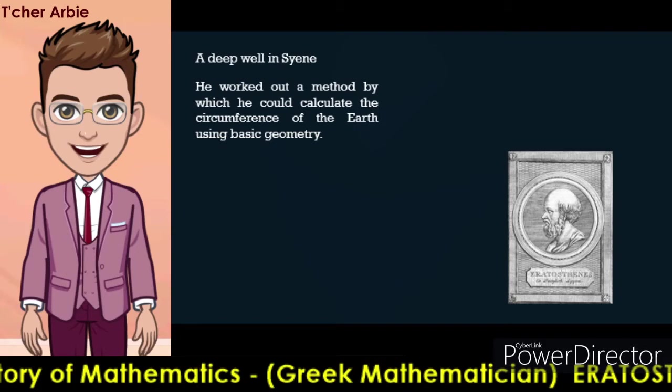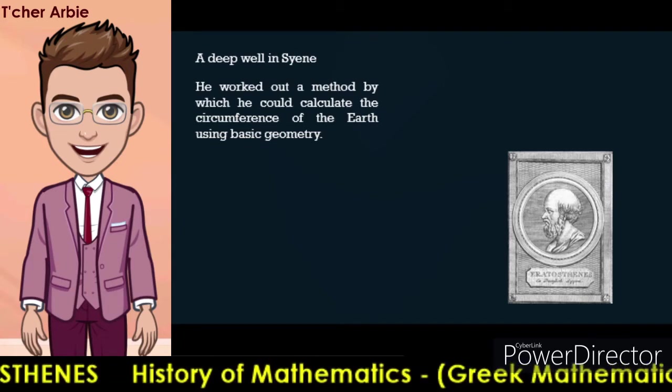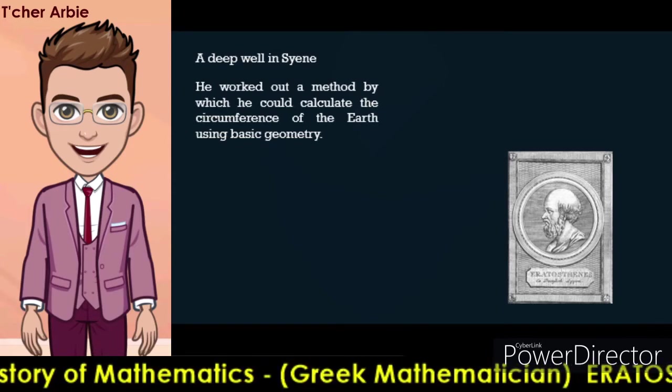Knowing that the earth was a sphere, he needed only two critical measurements to calculate the circumference. Eratosthenes already knew the approximate distance between Zaine and Alexandria as measured by the camel-powered trade caravans.